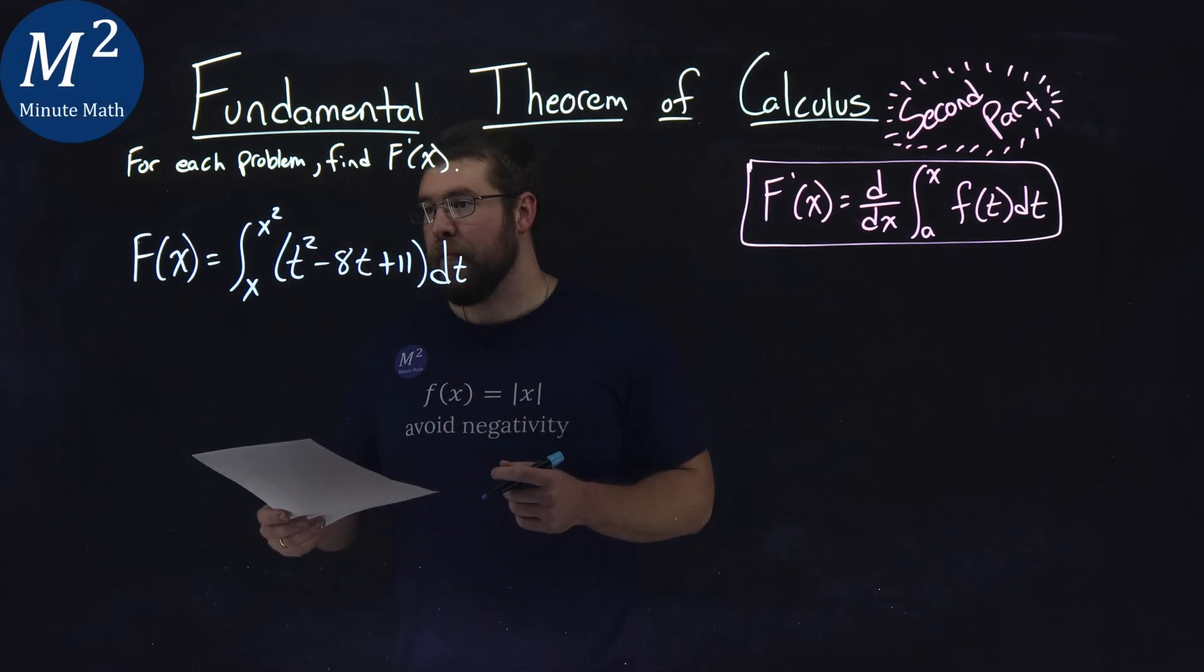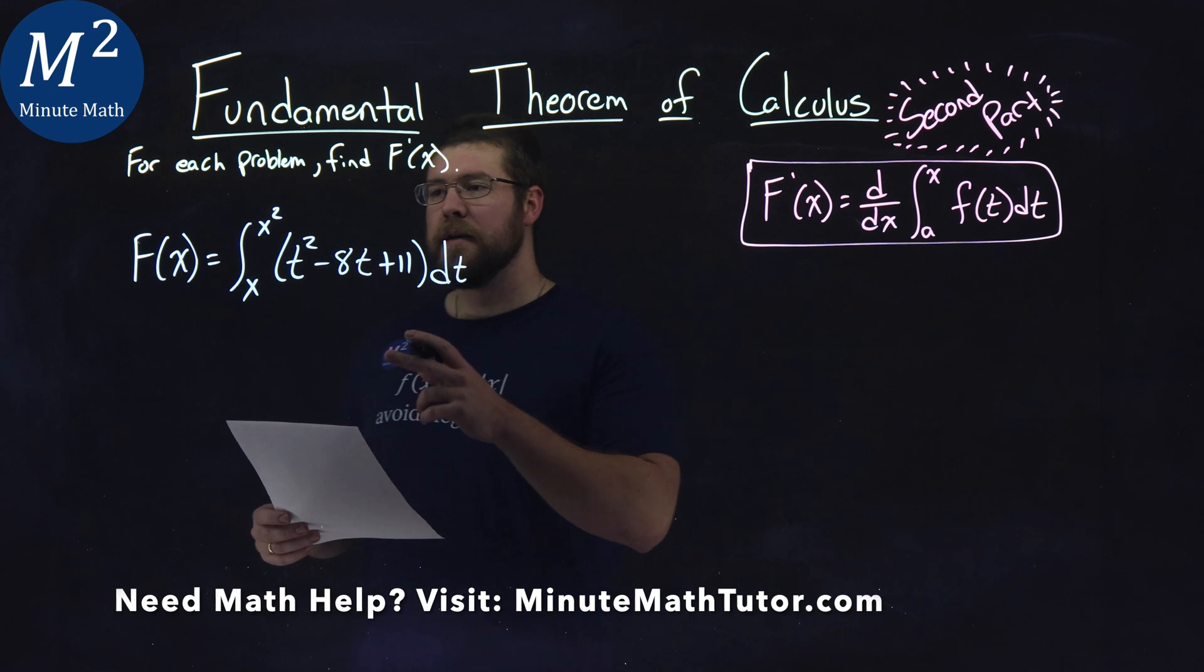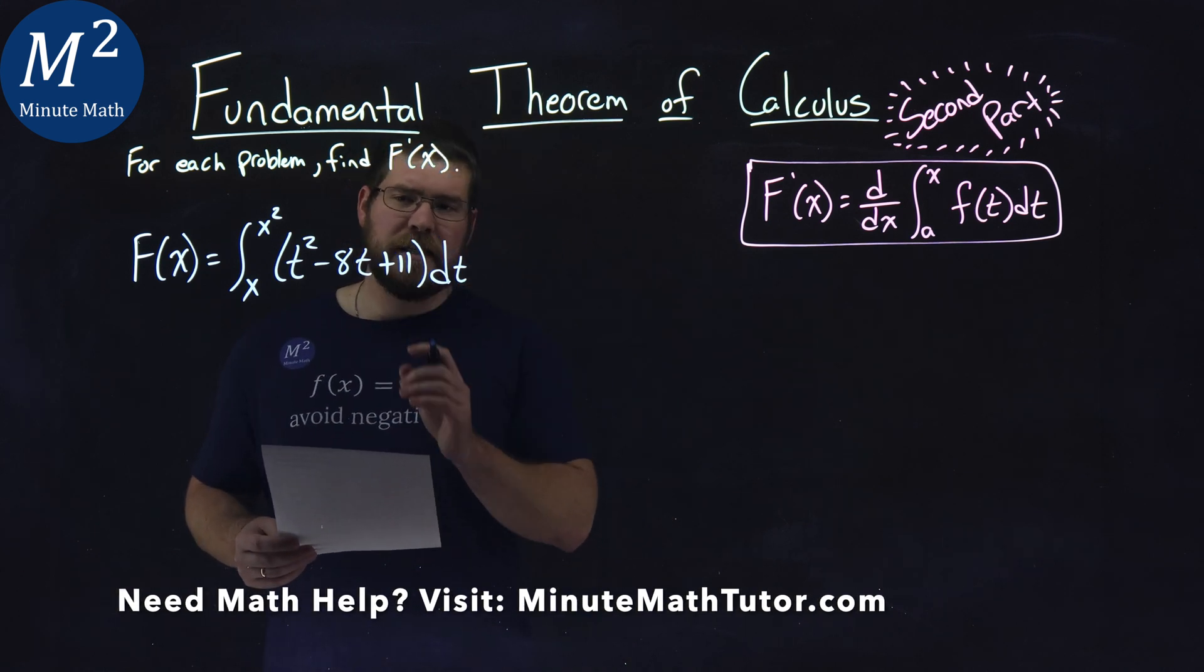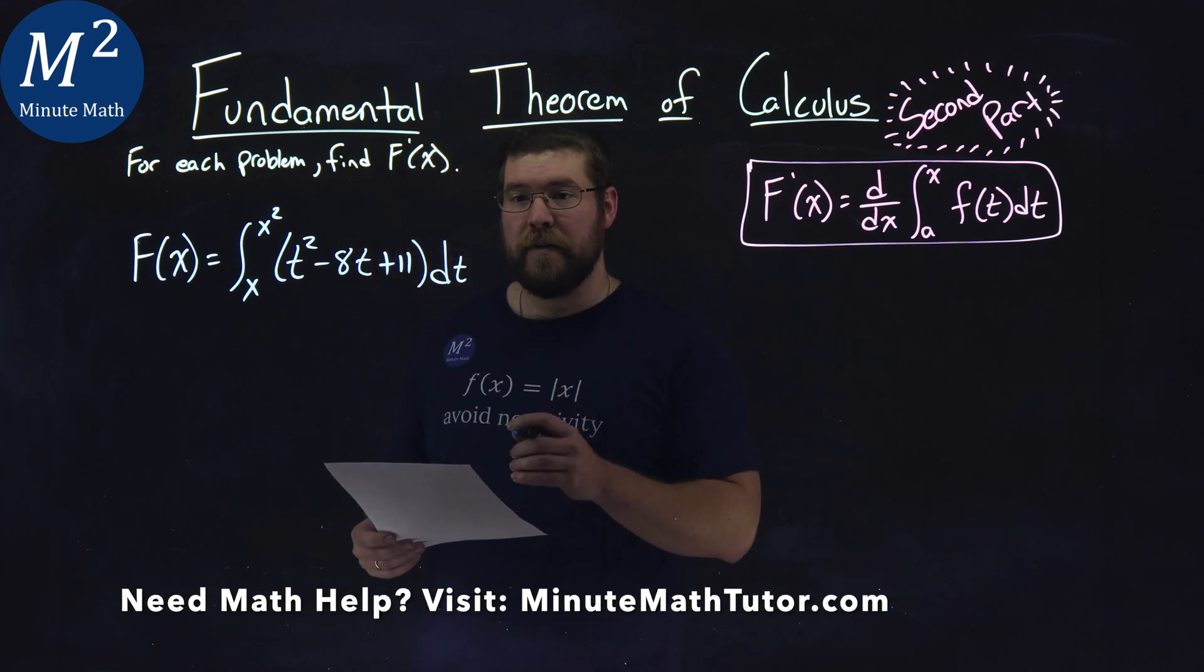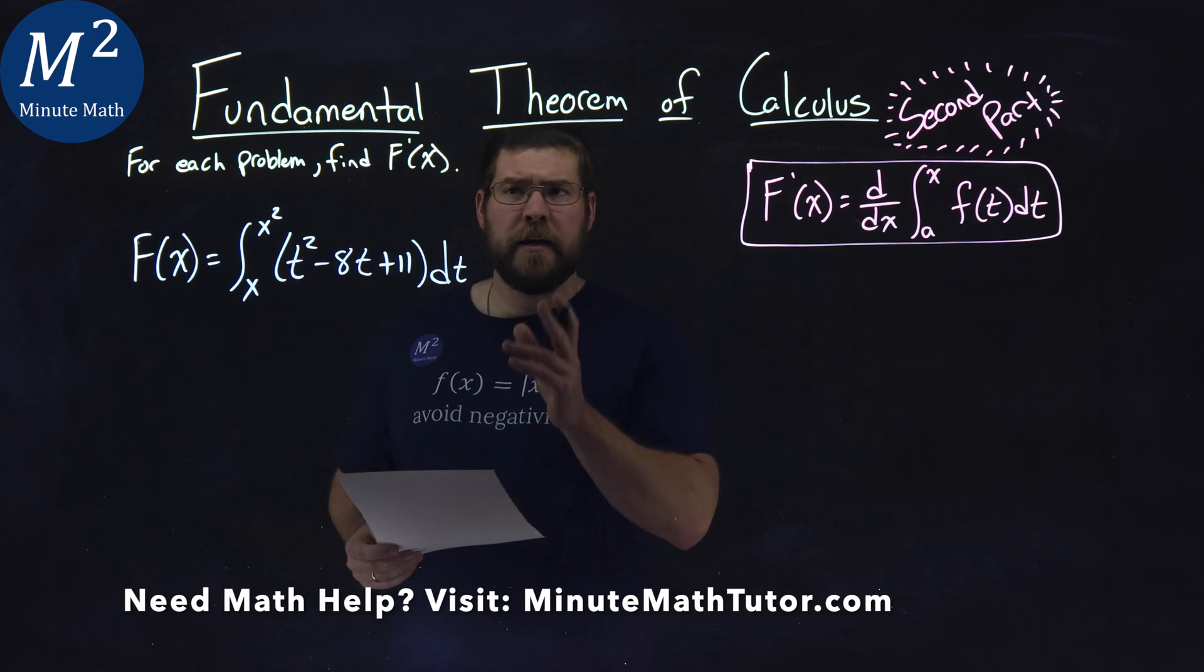We're given this problem right here. f of x is equal to the integral from x to x squared of t squared minus 8t plus 11 dt, and we need to find f prime of x.